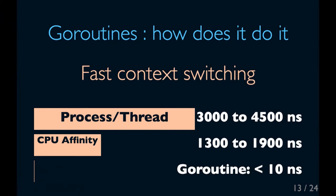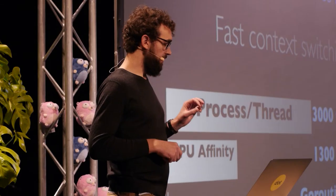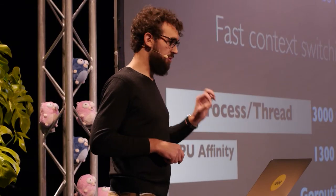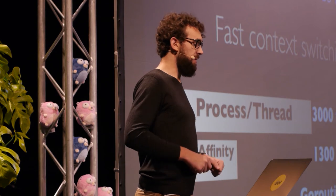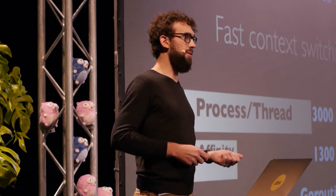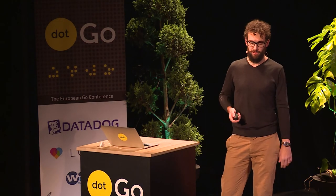We can compare this to the context switching in a classic operating system between processes or threads — it's up to 4,000 nanoseconds. If you pin a process or a thread to a particular core, it's up to 2,000 nanoseconds. But with a Go routine, it's less than 10 nanoseconds.